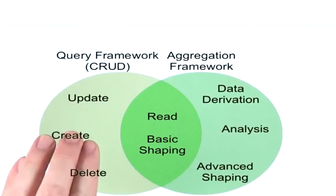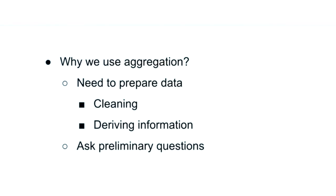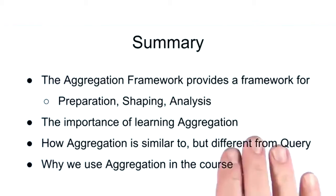Let's look at how the MongoDB query framework for CRUD operations and the aggregation framework relate and where they differ. They both allow for creating collections and basic shaping of the results. The aggregation framework also allows for powerful data derivation, analysis, and advanced shaping operations. With the $out stage, the aggregation framework can technically create collections as well. The reasons we use aggregation in this course are simple: much work in data science involves preparing data by either cleaning or deriving new information and asking questions of it, and this is best accomplished within aggregation.